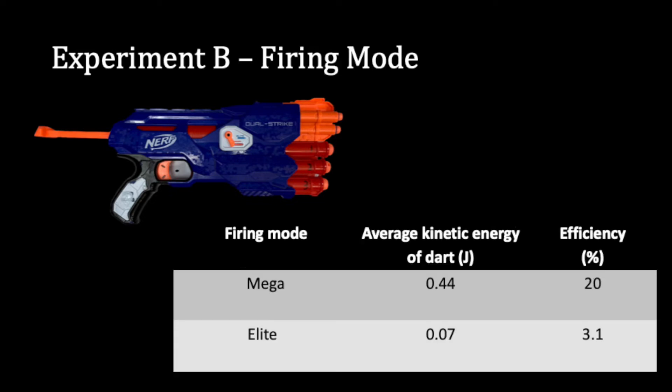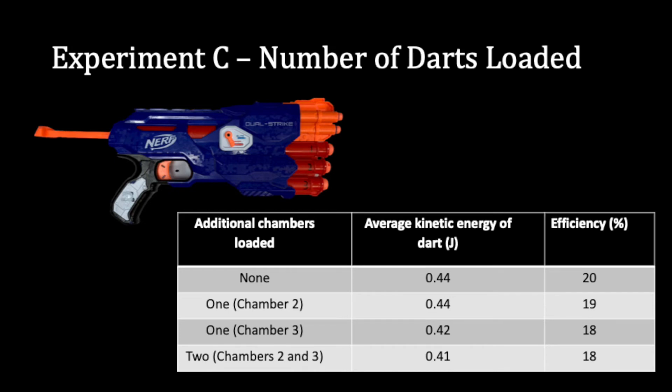The second experiment tested the firing mode and the Mega firing mode was significantly more efficient than the Elite. The third experiment tested shooting Megadarts out of Chamber 1 while varying which other Megadarts chambers were loaded. It was most efficient when no other chambers were loaded.